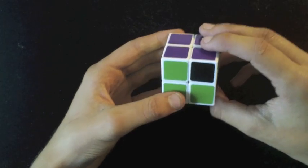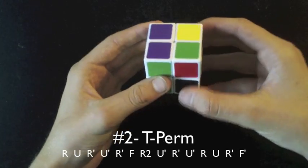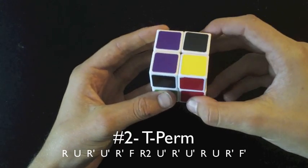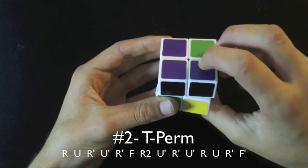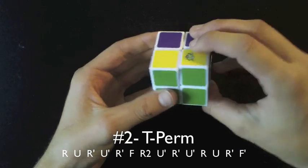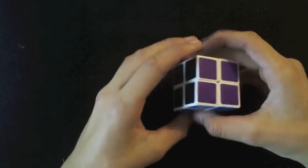And then you do these moves. R, U, R prime, U prime, R prime, F, R2, U prime, R prime, U prime, R, U, R prime, and then an F prime. And as you can see, it's finished the cube again.